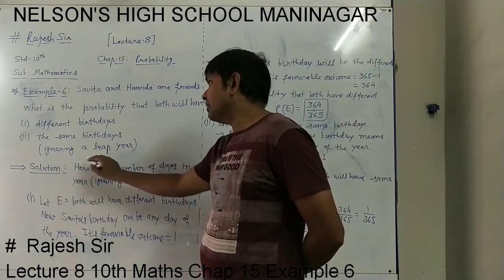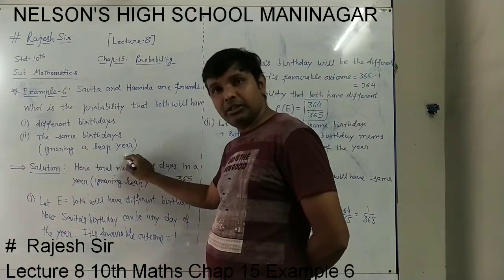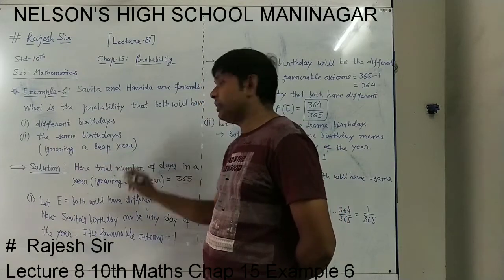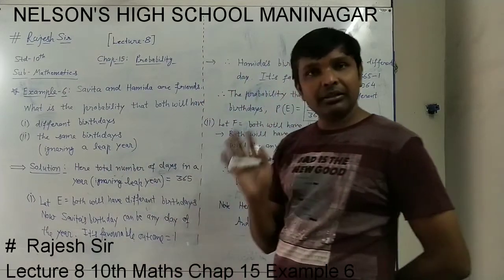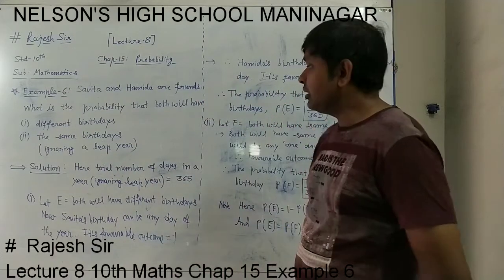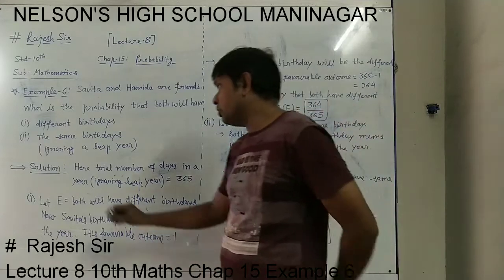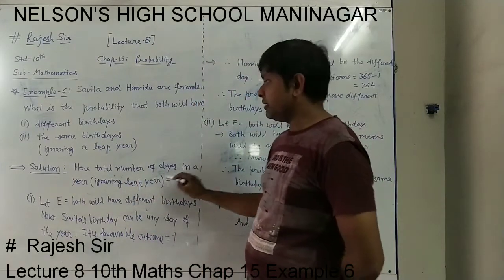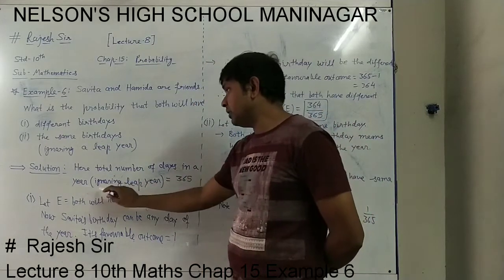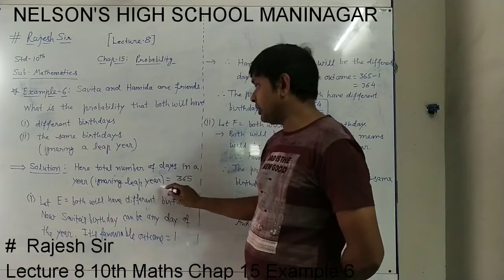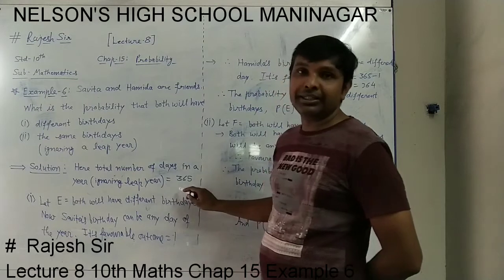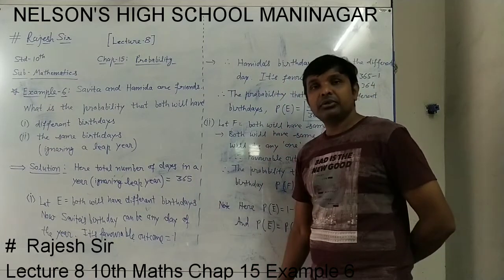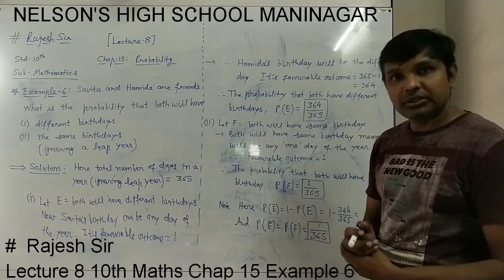One thing is clear in the question — ignoring a leap year, so it is not a leap year. In the solution, the total number of days in the year, ignoring the leap year, is 365.